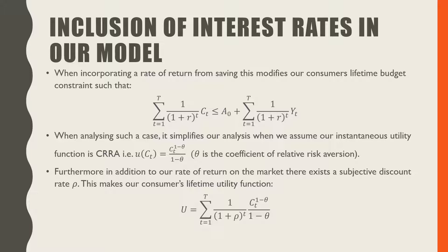In addition to our rate of return on the market, there exists a subjective discount factor of rho. So there's what the consumer could be earning on the market with his income, and there's also the consumer's direct time preferences. This modifies our lifetime utility function as shown below.